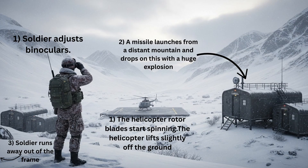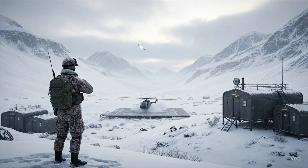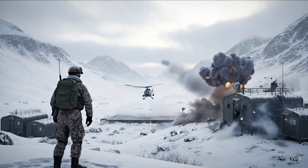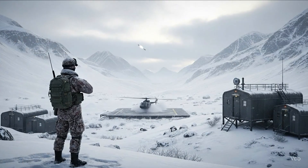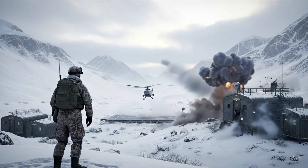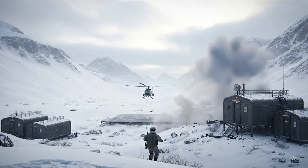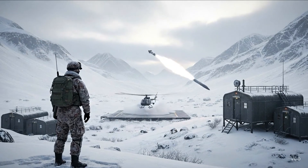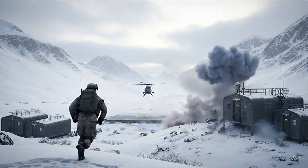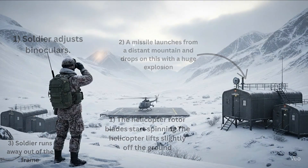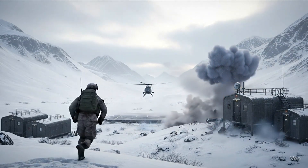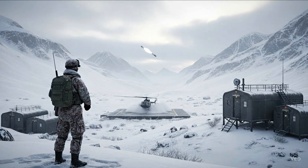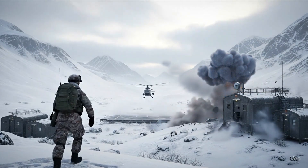We begin with this isolated mountain base, covered in snow and surrounded by cold mist. This one turned out surprisingly good. The soldier starts by adjusting his binoculars — smooth and subtle. The missile flies in from the mountain and slams into the bunker with a clean explosion. Meanwhile, the helicopter blades start spinning and it lifts off just a bit, adding urgency to the whole scene. Technically the soldier was supposed to run away, but instead he runs toward the bunker — honestly, that actually made it feel more realistic, like he's scrambling for cover. VEO handled the sequence like a pro.